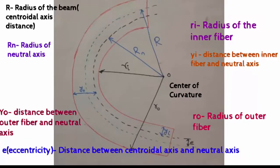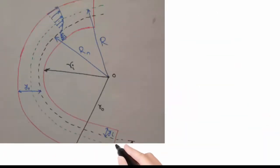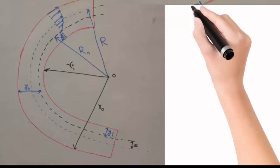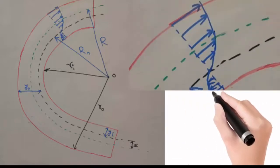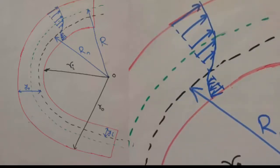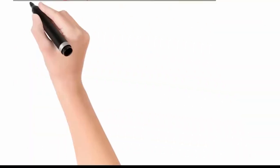T is the eccentricity, which is the distance between the neutral and centroidal axis. This image shows the stress distribution, which is hyperbolic. You can see the magnitude at the inner and outer fibers having different values.